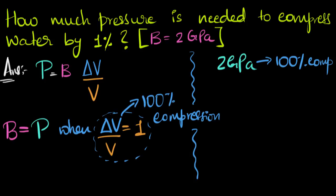So to get 1% compression, how much pressure is needed? We can just cross multiply and get the answer. The pressure needed would be two gigapascals times one divided by 100. And that pressure would be—giga is 10 to the power of nine.